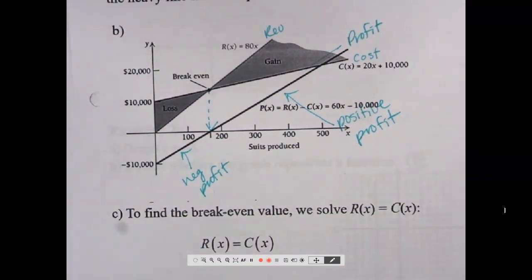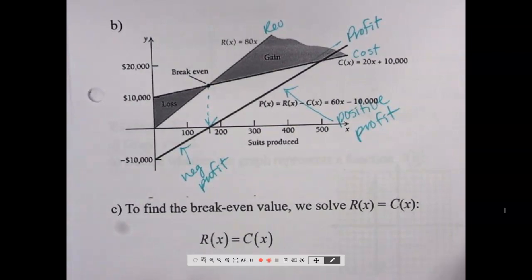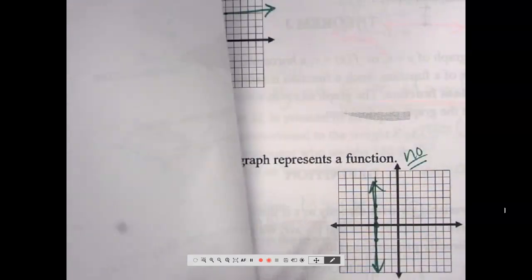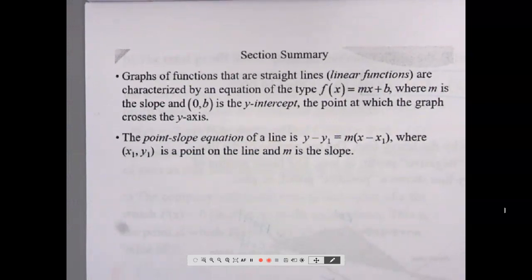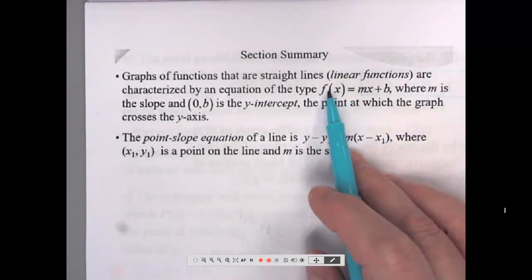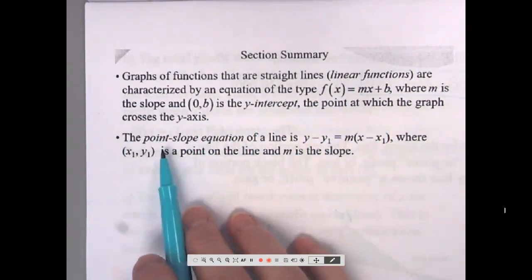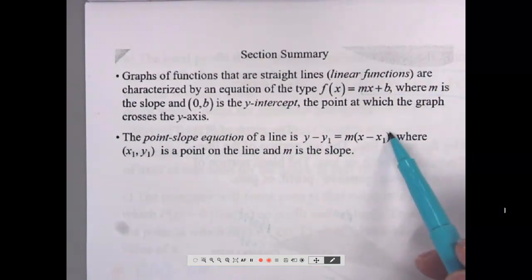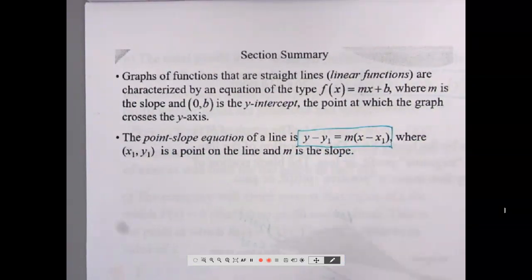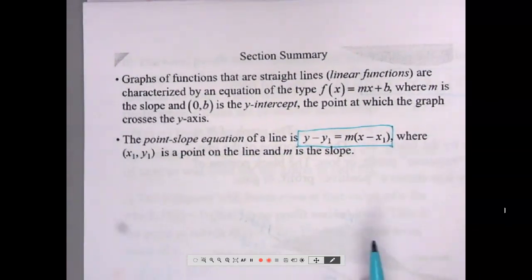To summarize: graphs of linear functions are straight lines characterized by y equals mx plus b, where m is the slope and the point zero-b is the y-intercept where the graph crosses the y-axis. The point-slope equation of a line is y minus y-sub-one equals m times x minus x-sub-one, where x-sub-one, y-sub-one is a known point on the line and m is the slope. That's the new form you should know. You have some homework — get started on that.